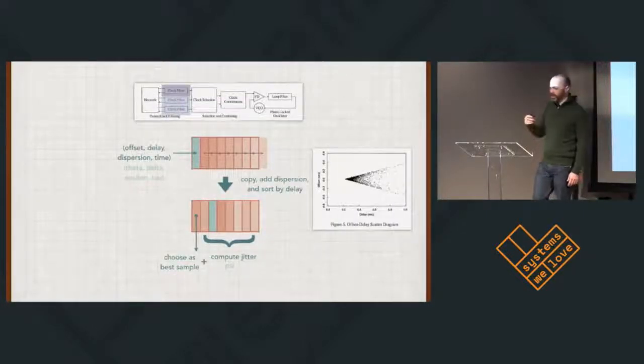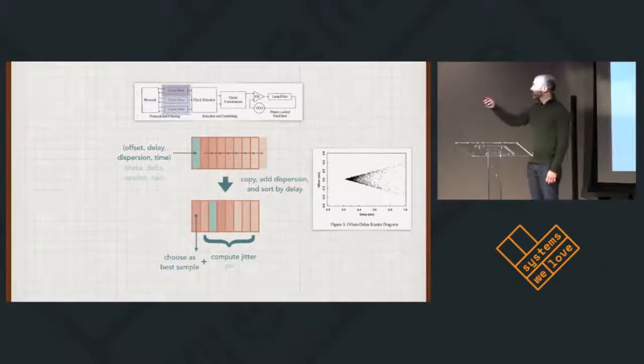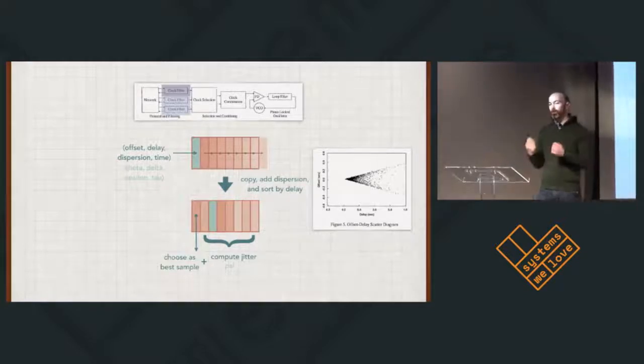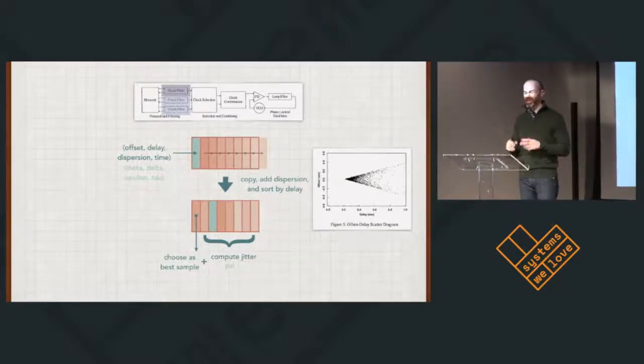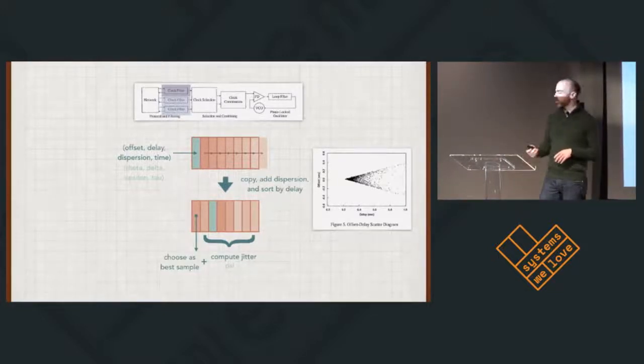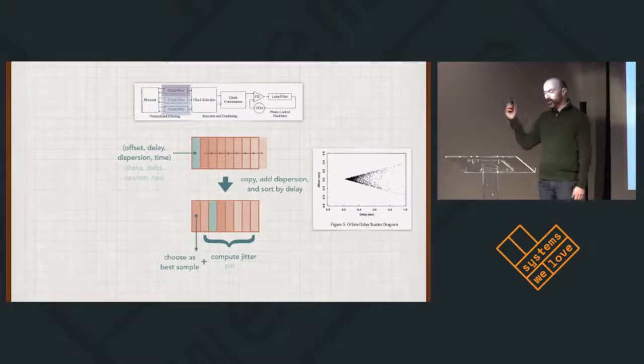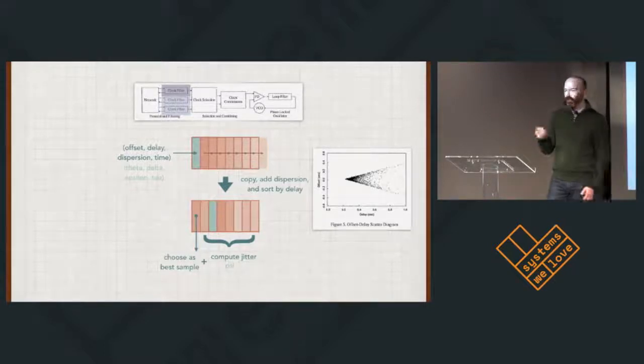NTP does a lot of processing of these samples. Instead of just saying I checked, and this is the time, and we're going with that time, instead it builds up some statistics about what it learns from other machines. For each machine it's connected to, it builds up a shift register of samples that have been made, and every time it gets a new sample, it resorts them, and picks what it considers the best sample of that group, and then computes what they call the jitter, which is really kind of like the noise in the system on the rest of the samples. The best sample is chosen as the one that came back in the shortest delay, and that's based on trial and error, and this plot on the right shows work they did to do a bunch of tests, and they found that the shorter the delay, the less error there was in it, in the typical case.